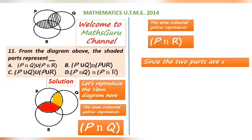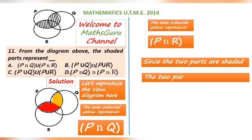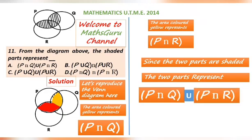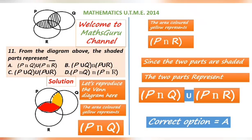Since the two parts are shaded, then the two parts represent P intercept Q union P intercept R. That is to say P intercept Q is combined with P intercept R. Therefore, the correct option is A.